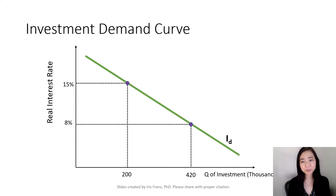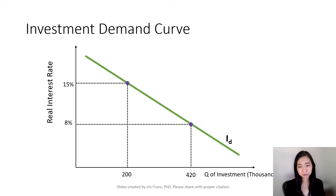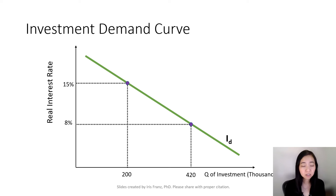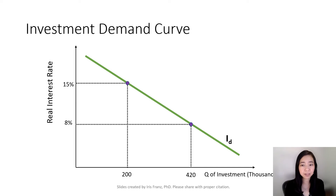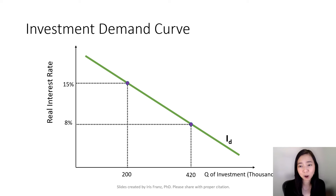Next, we're going to talk about the investment demand curve. For the investment demand curve, on the vertical axis you are going to see the real interest rate. On the horizontal axis, you're going to see the quantity of investment, in thousands of dollars.